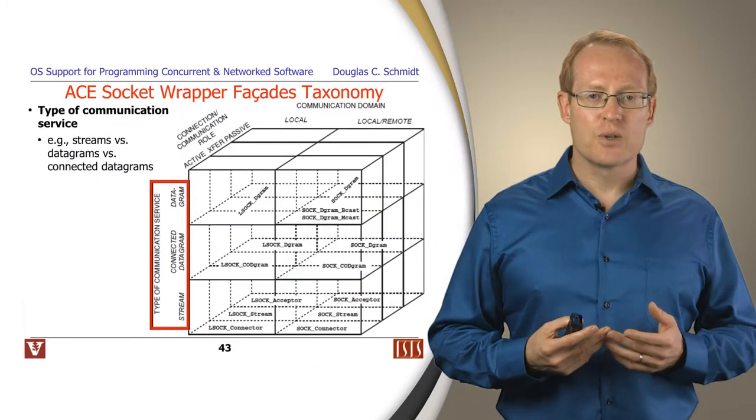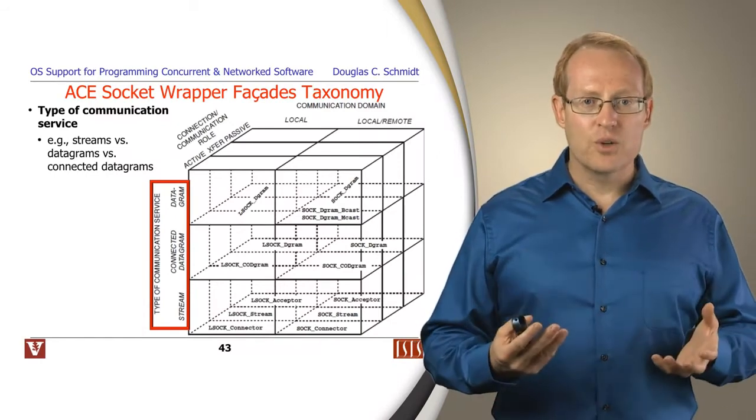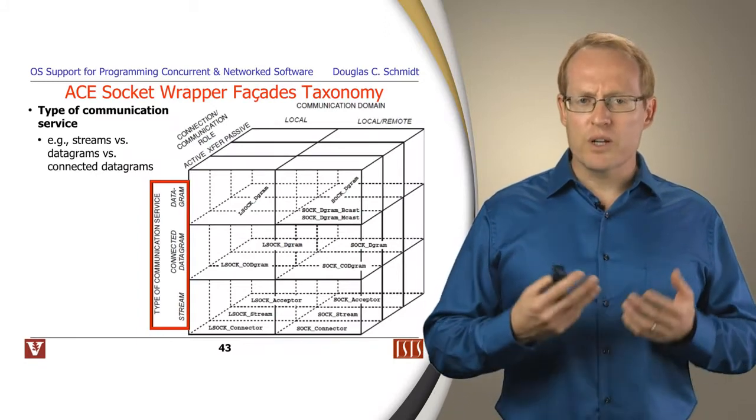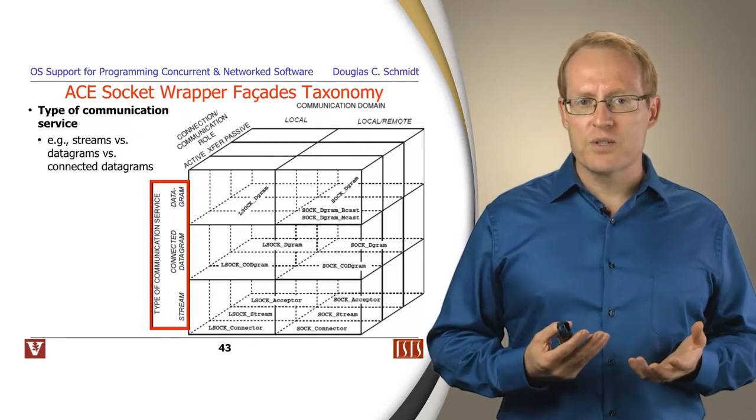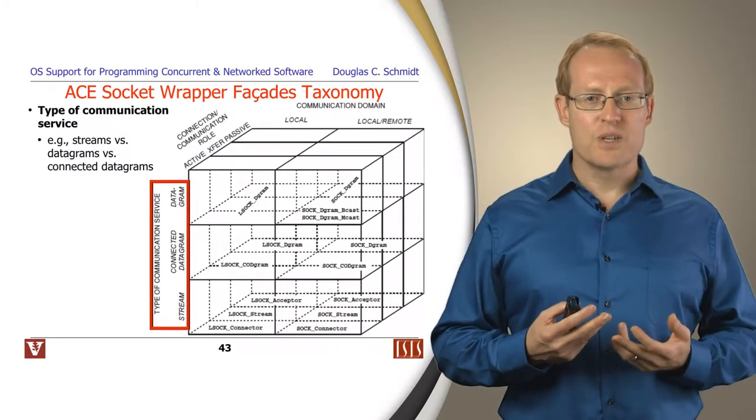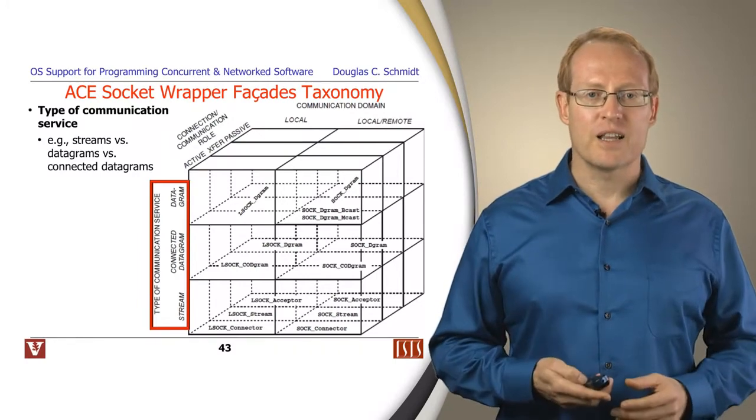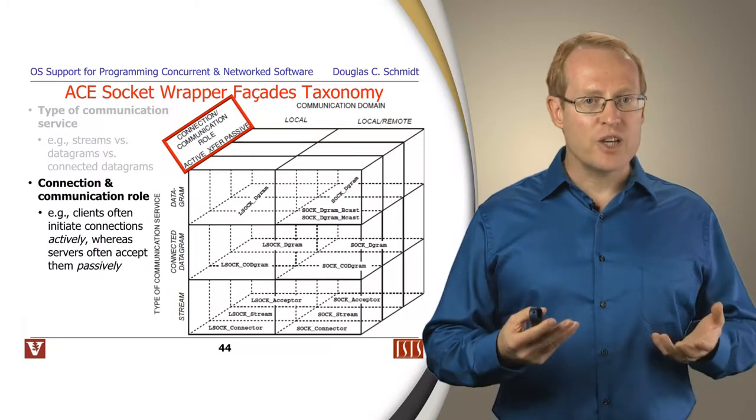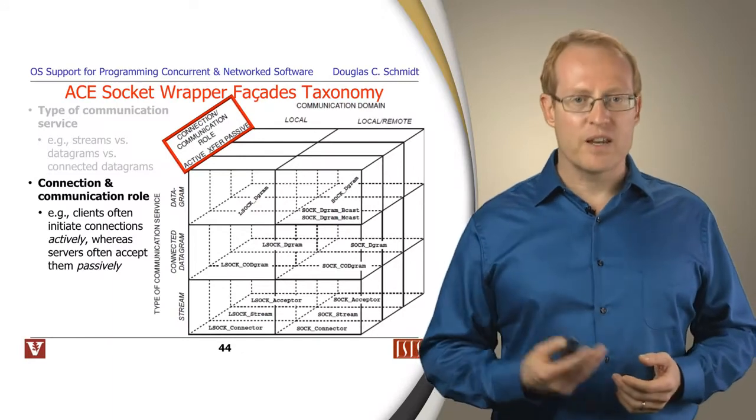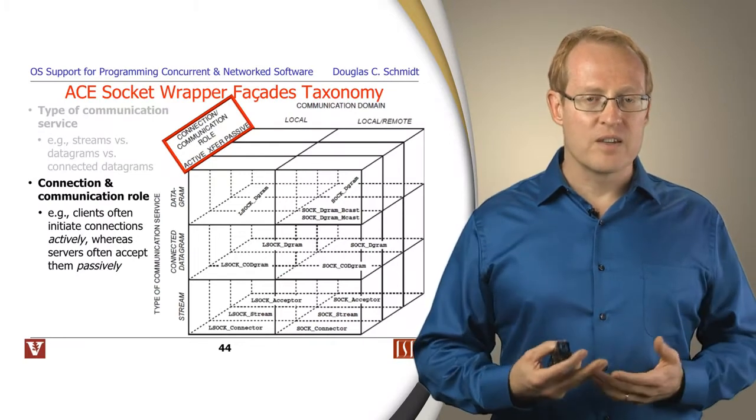If you take a look at the socket wrappers in ACE, you'll see that they're intentionally designed to be much more clearly aligned with the various design dimensions of programming both local and remote communication. One of the dimensions is the type of communication service. Are we using datagrams? Are we using streams? Are we using something called a connected datagram? These kinds of things are factored away into the manner in which we design the classes. Another key theme here is connection role versus communication role. There's a pair of connection roles, active connections and passive connections, and then you have communication that takes place once things are connected. Once again, these things are baked into the design of the classes.